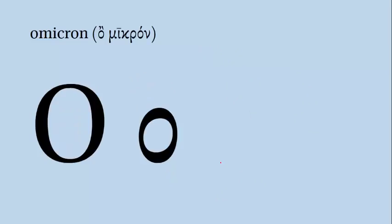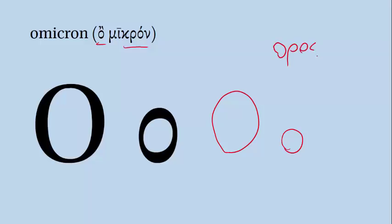Our next letter is Omicron. The name literally means 'small O,' and Omicron is another of our vowels that's always short — it always makes a short O sound as in 'dot' or 'log.' This is contrasted with Omega, which we'll get to in a minute, which makes that long O sound. To draw an Omicron is pretty easy — uppercase looks like an uppercase O, and lowercase like a lowercase O. An example of a word with Omicron is the word 'oros,' which means 'mountain.'